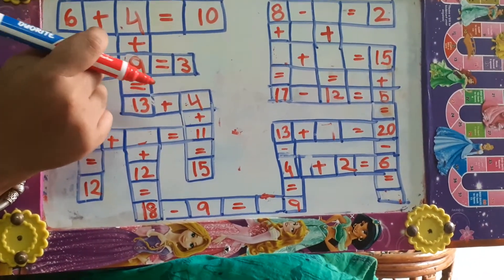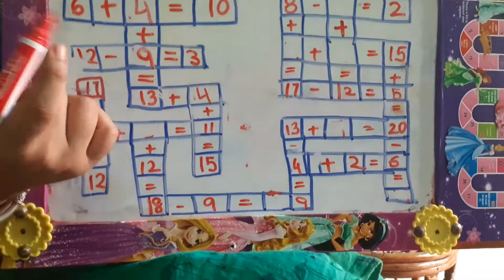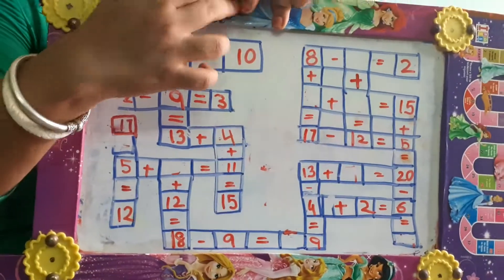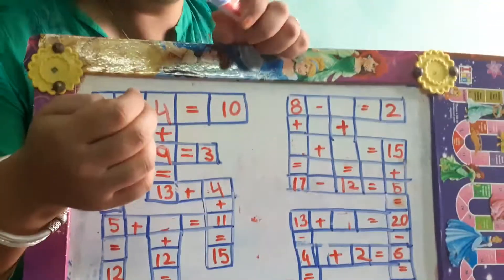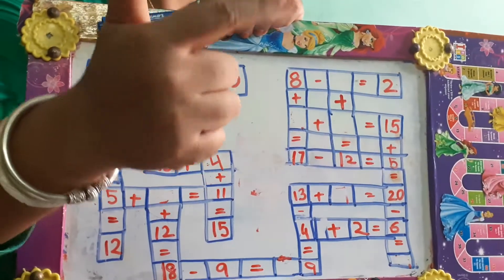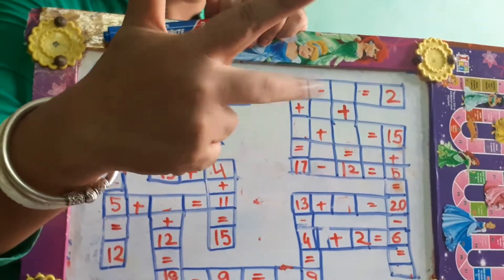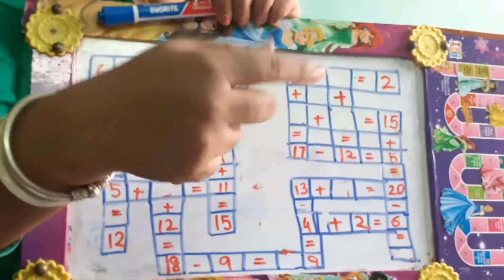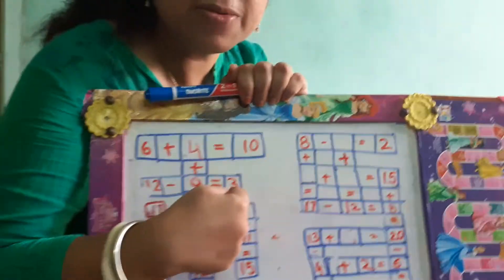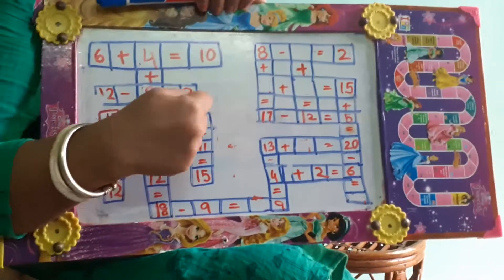So see, this also is solved. 12 minus 9 is equal to 3. Count backward children, 12 minus 9. 12 before 11, 10, 9. How much? 3. Here is the answer. Got it?